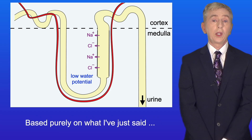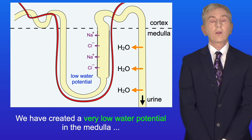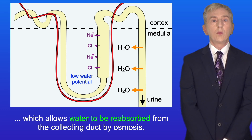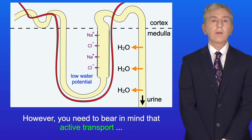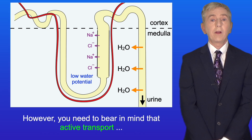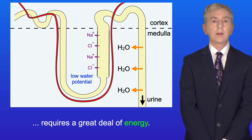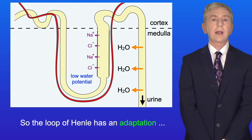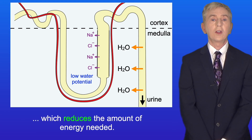Now, based purely on what I've just said, it looks as though the loop of Henle has done its job. We have created a very low water potential in the medulla, which allows water to be reabsorbed from the collecting duct by osmosis. However, you need to bear in mind that active transport requires a great deal of energy. So the loop of Henle has an adaptation which reduces the amount of energy needed.